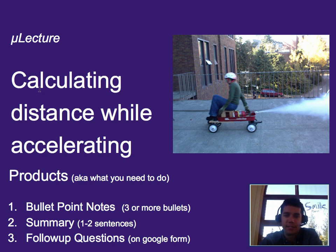This one's going to be on calculating distance while accelerating. So if we've got, let's say, a little rocket wagon here that's homemade, how do we predict where this person's going to be after one second or after two seconds? This would be important because if you don't have a long enough runway, then you may be flying off of it someplace. So it would be important to know.